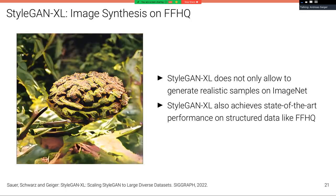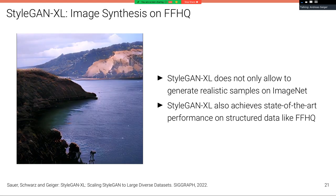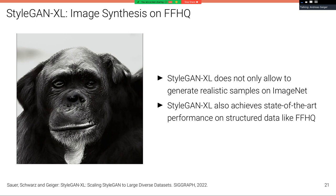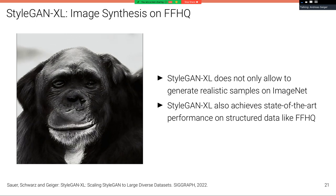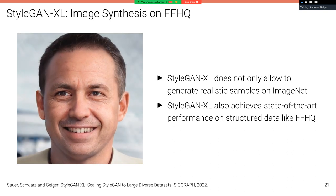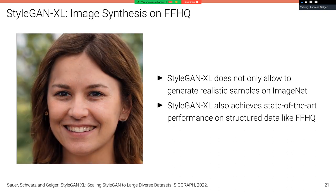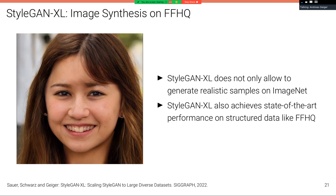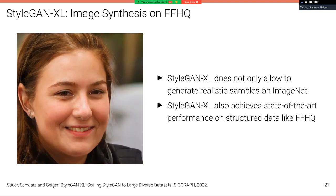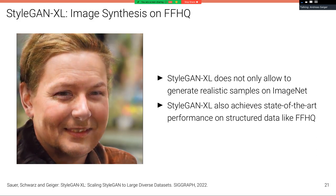StyleGAN-XL, of course, does not only allow to generate realistic samples on ImageNet. StyleGAN-XL also achieves state-of-the-art performance on structured data like FFHQ, which we can see here. FFHQ is a much easier dataset in some sense because it's much more structured, so our model also applies to that dataset.